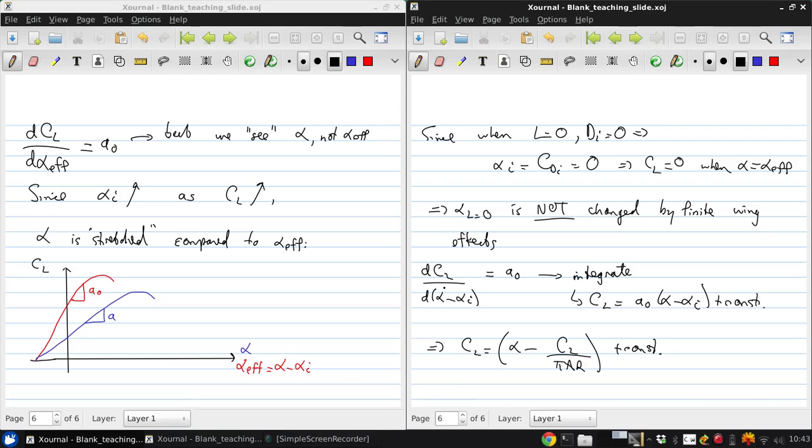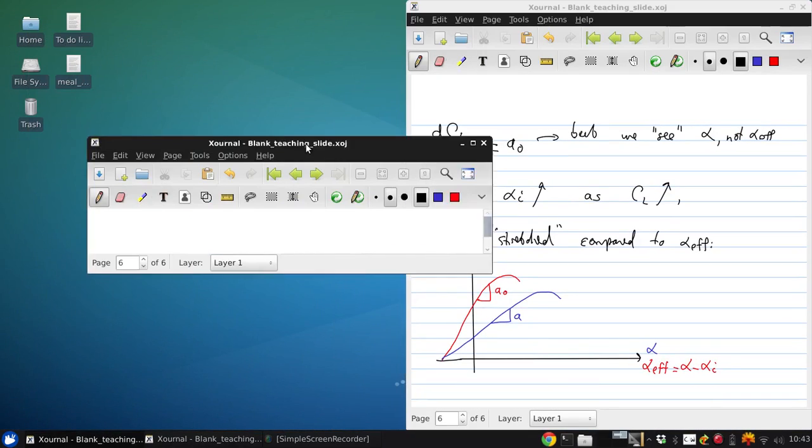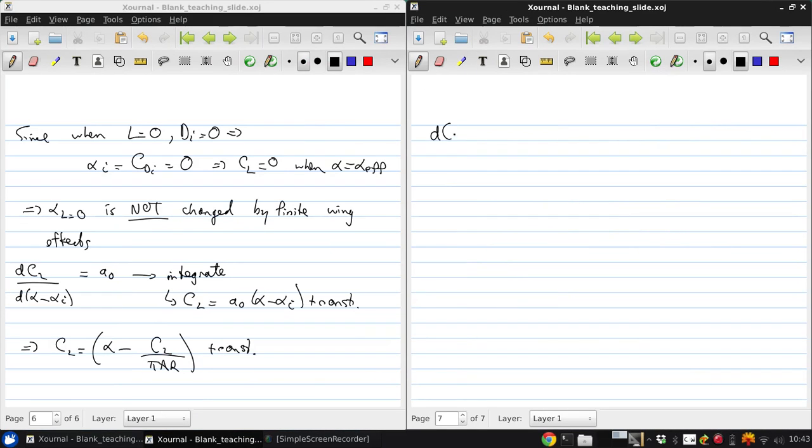And now if we go and differentiate again, now that we've written this in a slightly different form with the help of the integration process, we can write dCL and now differentiate with respect to alpha instead of alpha effective. This is A by definition, and this is going to be A0 over 1 plus A0 over π AR. And this is for an elliptical lift distribution.